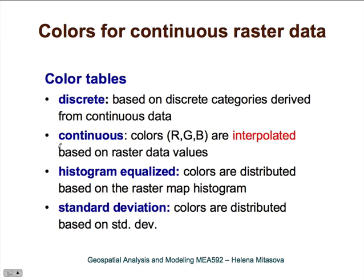Another and most common approach is the continuous color table. These continuous color tables use interpolated values of red, green, and blue intensities to assign a color for each unique value in the raster dataset. These continuous values can be assigned in different ways: with uniform interval, histogram-equalized, or distributed along standard deviation, among other methods.